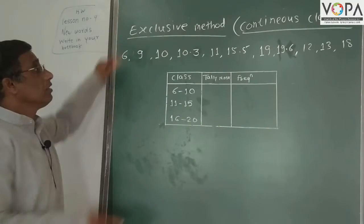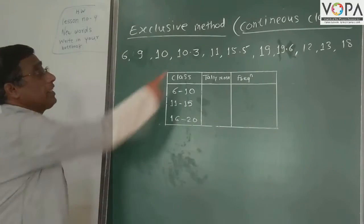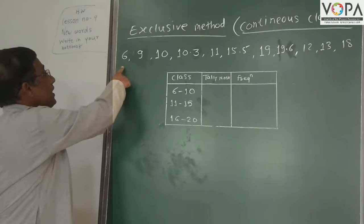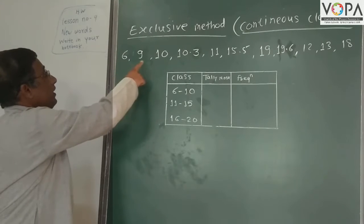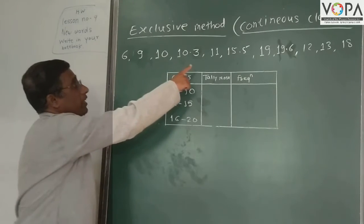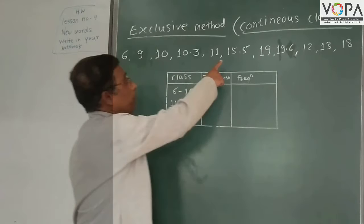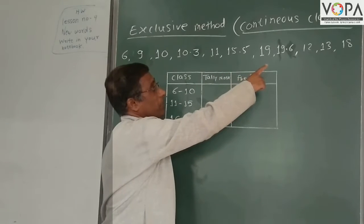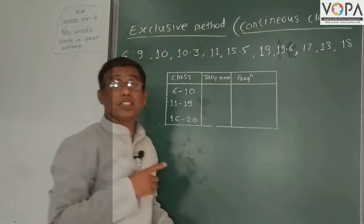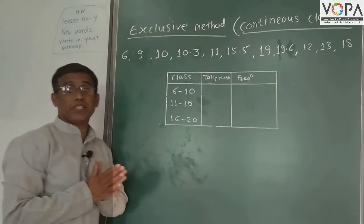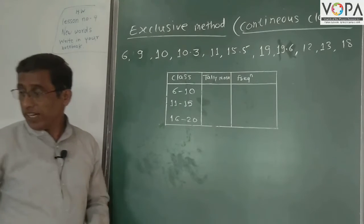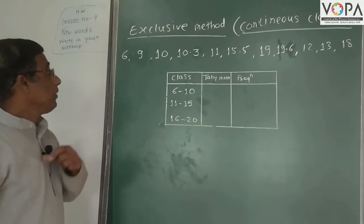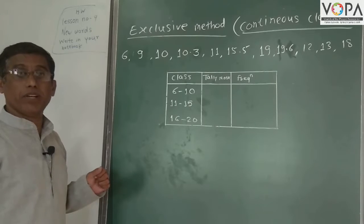The exclusive method means continuous classes. We have been given observations: 6, 9, 10, 10.3, 11, 15.5, 19, 19.6, 12, 13, 18 — 11 such observations are given, and we have to make a frequency distribution table.